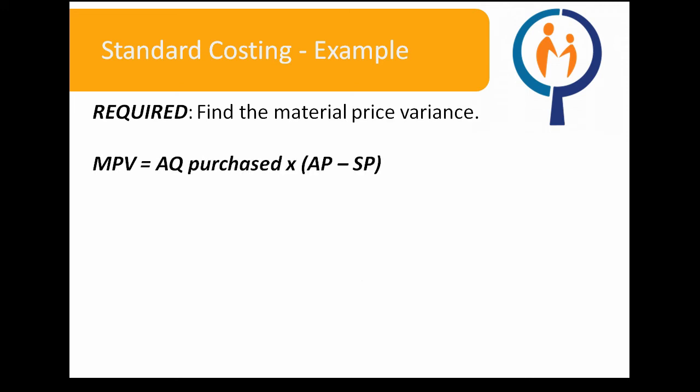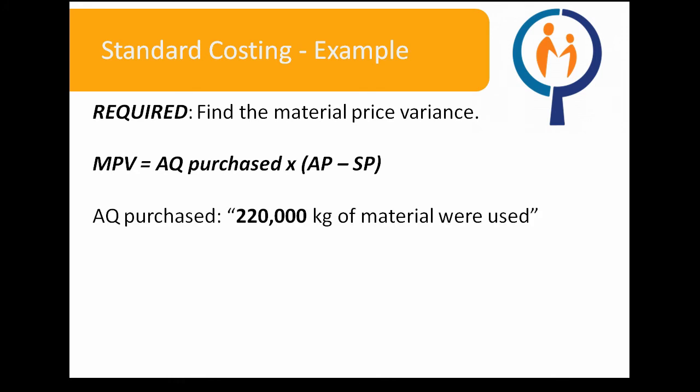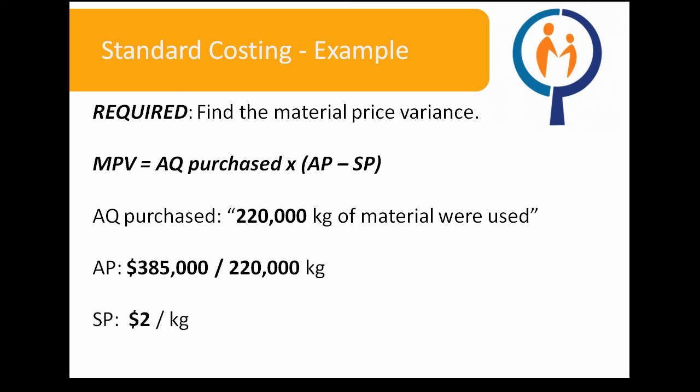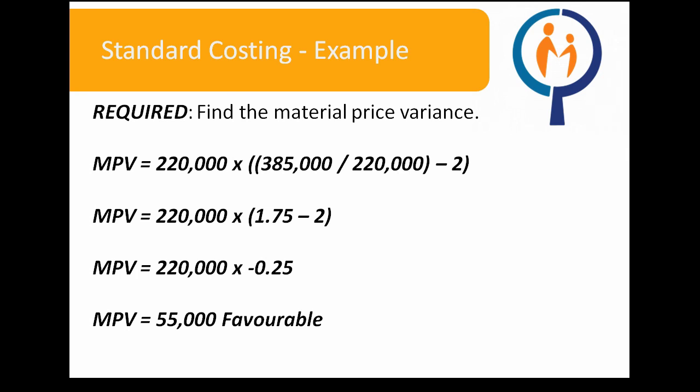For the material price variance, our actual quantity purchased is 220,000 kilograms, since the question states that 220,000 kilograms of material were used and there is no mention of any separate material purchases. Our actual price is $385,000 divided by 220,000 kilograms used. The standard price is $2 per kilogram. The result is a $55,000 favorable variance, as the actual price is less than the standard price.